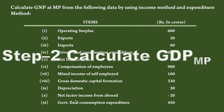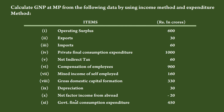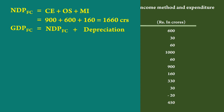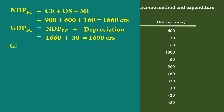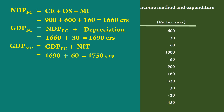Step 2: Calculate gross domestic product at market price. Add depreciation to net domestic product at factor cost to find gross domestic product at factor cost. Depreciation is 30 crores. Gross domestic product at factor cost is equal to 1690 crores. Add net indirect tax of 60 crores to find gross domestic product at market price. Gross domestic product at market price is equal to 1690 plus 60, equal to 1750 crores.